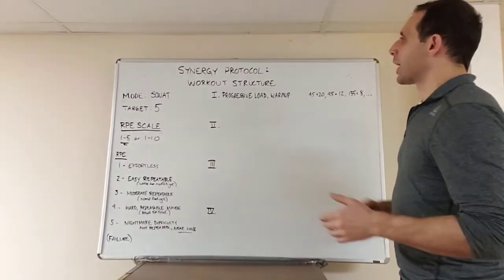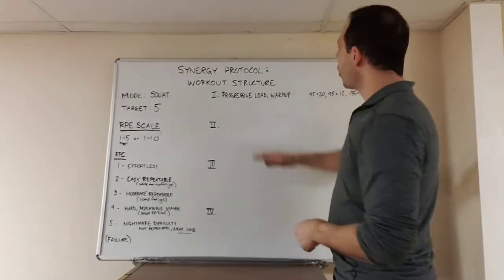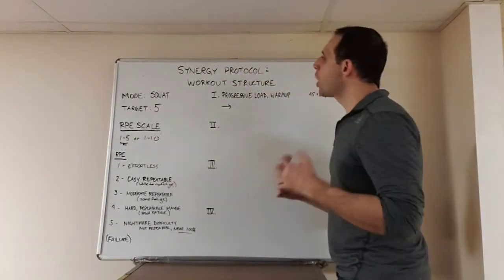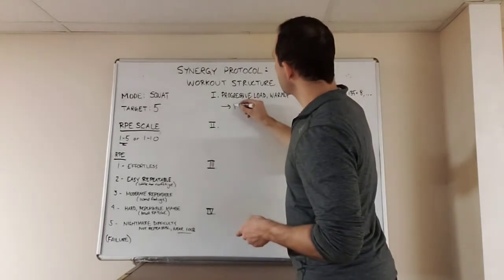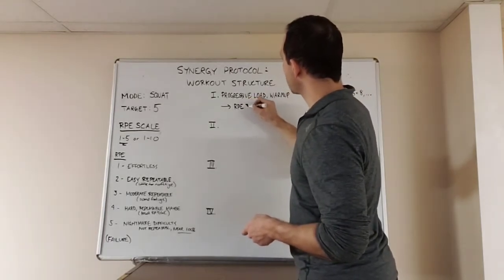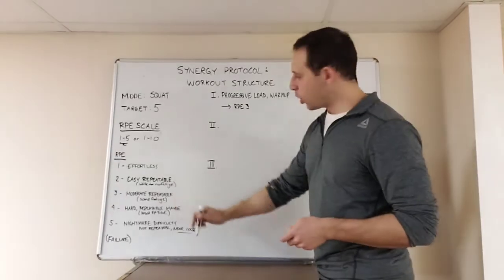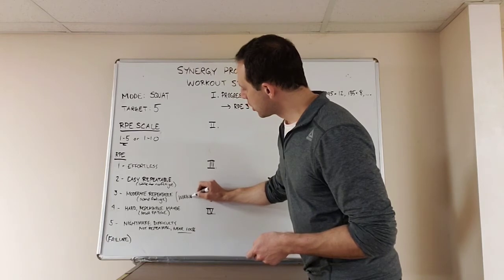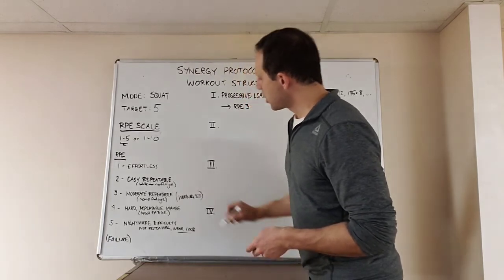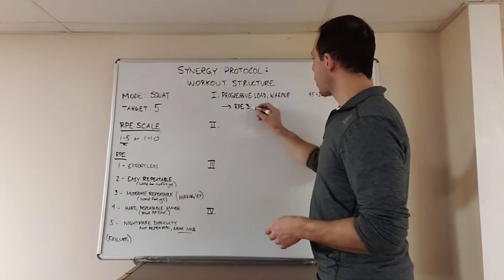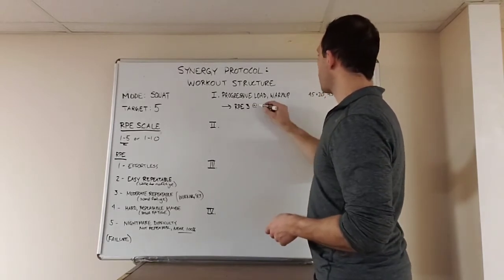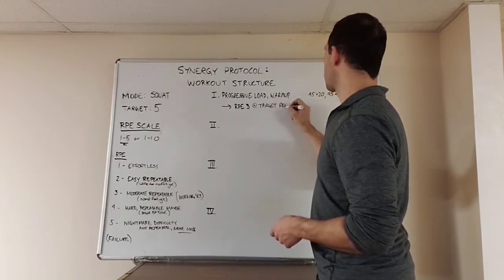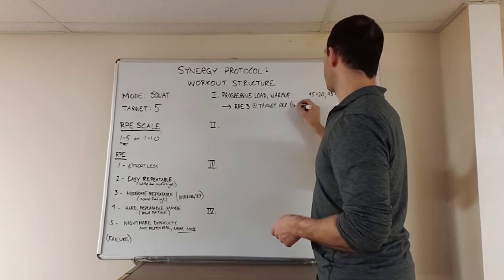Up to a point. What's the point? And this is where the target repetition scheme comes in. The goal of phase one, phase one goal, I want to get to an RPE of 3, a working weight. Remember, I called this a working weight. I want to get to a moderate difficulty, RPE of 3 at the target rep scheme.